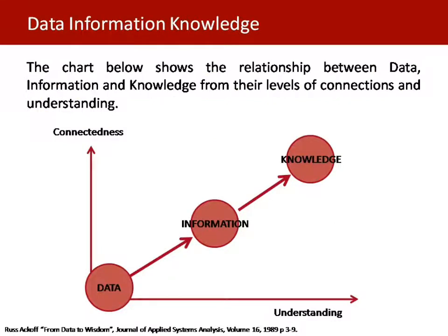Let's look at how the chart below shows the relationships between data, information, and knowledge from the levels of connections and understanding. This is a chart from Rust Alpha. Data will be at a lower level in terms of connection and understanding — little to no connection, no understanding. Information has more connections and a better understanding. And at the top, you have knowledge, where you have high connections and a high level of understanding.